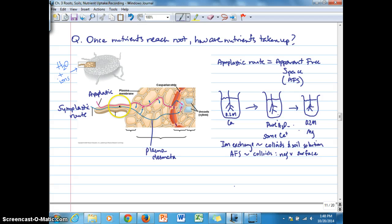At some point, the nutrients moving through the apparent free space are going to enter the cell, either in the cortex or being forced through by the Casparian strip into the endodermis. But at some point along that path, nutrients have to cross the cell membrane to enter the cell, and then they can move symplastically towards the vascular cylinder.